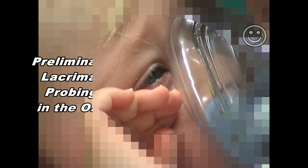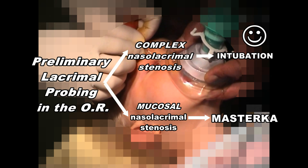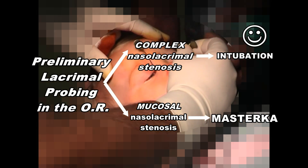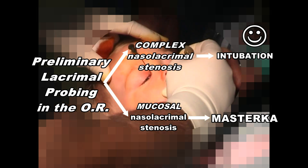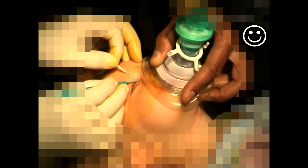In summary, careful preliminary lacrimal probing in the operating room is paramount for proper use of the Master Ka. It distinguishes by tactile sense the more common types of mucosal nasal lacrimal stenosis from the less frequently seen cases with complex stenosis. By requiring metal-to-metal contact in the nasal fossa, it avoids false passages, which always result in failure. It facilitates the correct choice of stent length, which should extend 5 mm beyond the site of nasal lacrimal obstruction without exceeding the distance between the punctum and the nasal fossa floor. When the Master Ka is appropriately selected and inserted properly, the complications are minimal and the success rate very high.